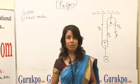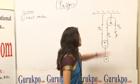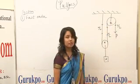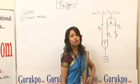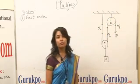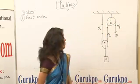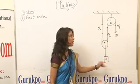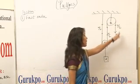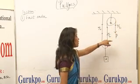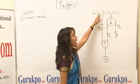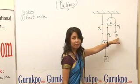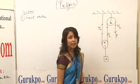Let us now consider the first order system of pulley. Two pulleys are being attached. One pulley is attached to the ceiling, which is fixed, and the other pulley A is a movable pulley where the load is being attached. The effort is applied onto B, and one end of the rope is attached to the ceiling while the effort is applied to the other end.